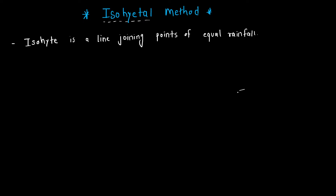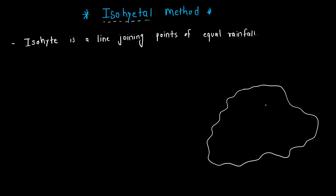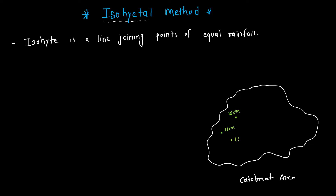To understand this, we will draw a catchment area. In this catchment area I am writing certain values of precipitation. At this point there is 10 cm, at this point 11 cm, at this point again 10 cm, here 10 cm, and here 9 cm.